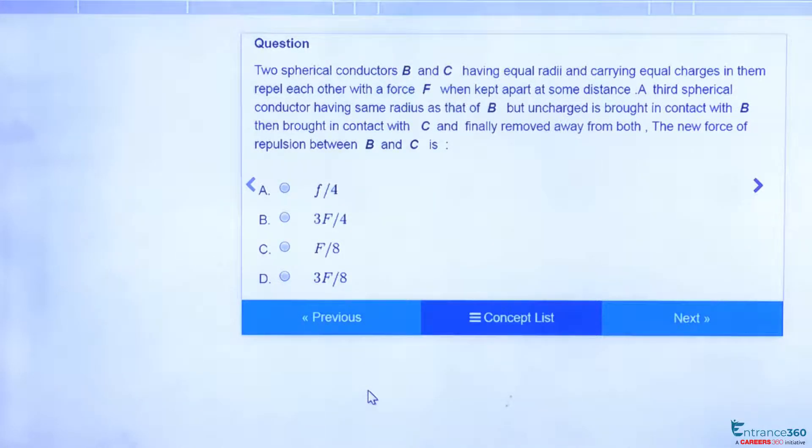Now a third conductor which is uncharged is first brought in contact with B and then with C. Then what is the new force of repulsion? We can use the concept of force between charges here.